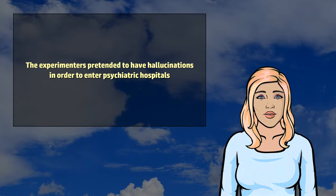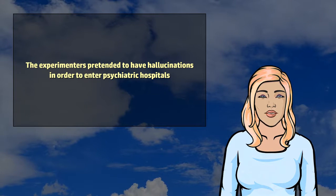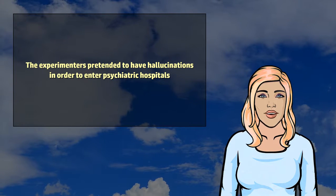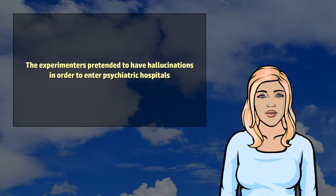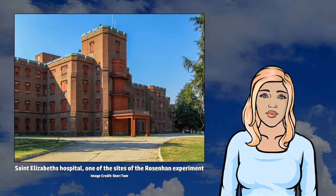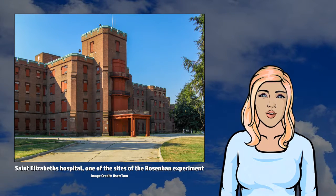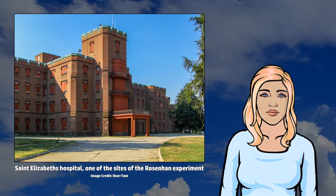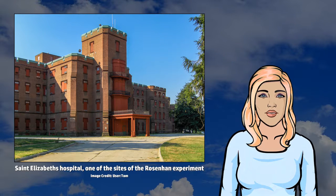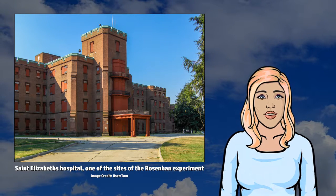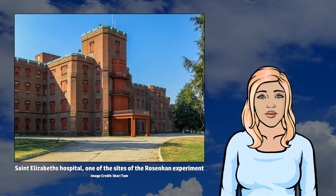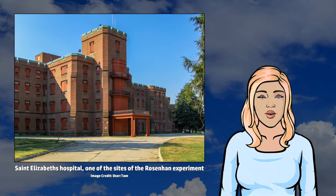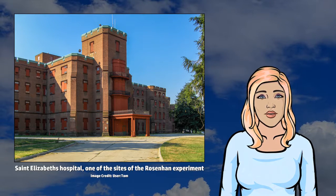Rosenhan's study had two parts. The first part involved the use of healthy associates, or pseudo-patients, who briefly feigned auditory hallucinations in an attempt to gain admission to 12 different psychiatric hospitals in 5 different states in various locations in the United States. All were admitted and diagnosed with psychiatric disorders. After admission, the pseudo-patients acted normally and told staff that they felt fine and had no longer experienced any additional hallucinations.